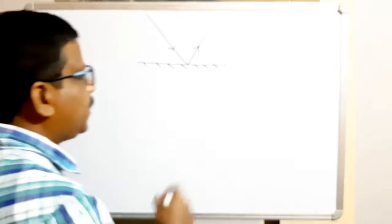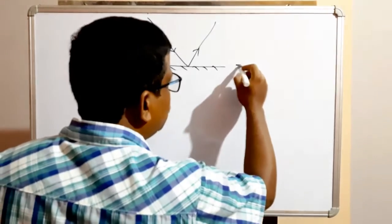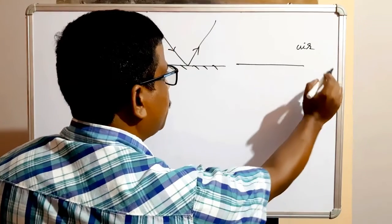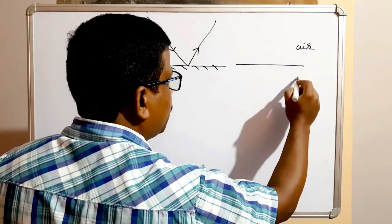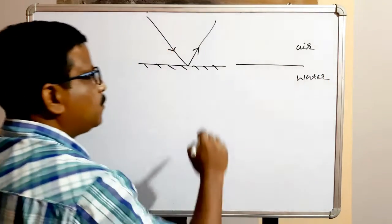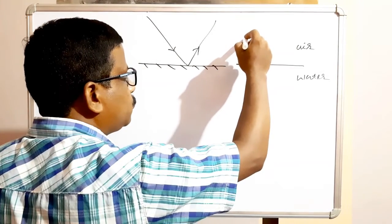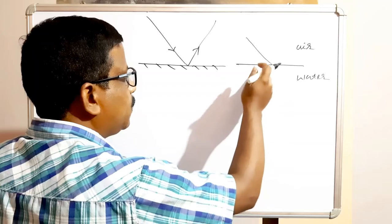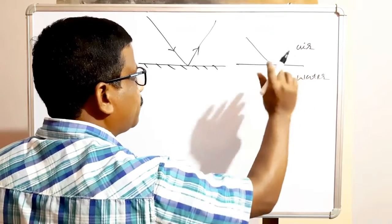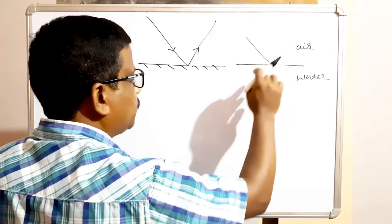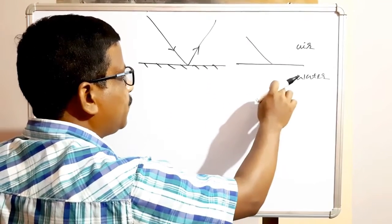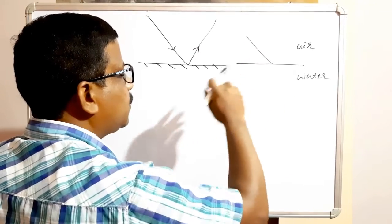Now, refraction. Suppose a ray of light — here is one optically transparent medium and here another optically transparent medium. Suppose this is air and this is water. When a ray of light passes from air to water, this is the surface of separation of the two transparent mediums. When the ray of light travels from one medium to another medium, it will change its direction or deviate.